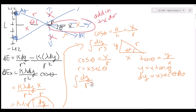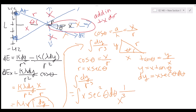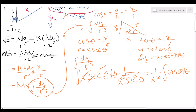Plugging into the integral: dy becomes x secant² theta d theta, and r³ becomes x³ secant³ theta. After canceling, we get (1/x²) times the integral of cosine theta d theta. Integrating cosine theta gives sine theta, so the result is sine theta / x². Since sine theta = opposite/hypotenuse = y/r, this becomes y / (x² r).